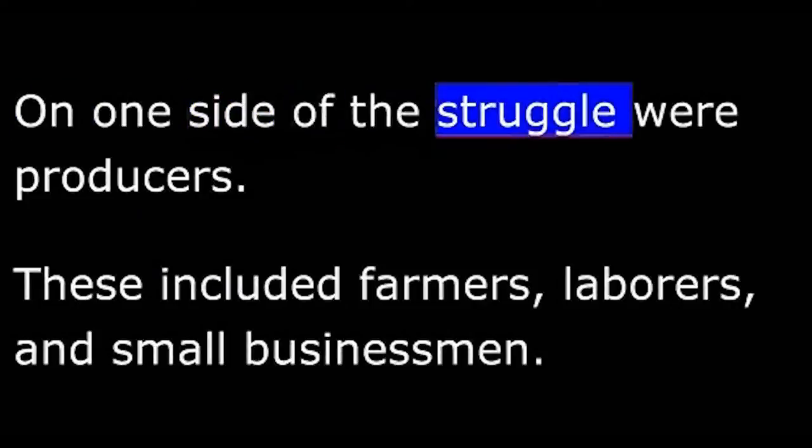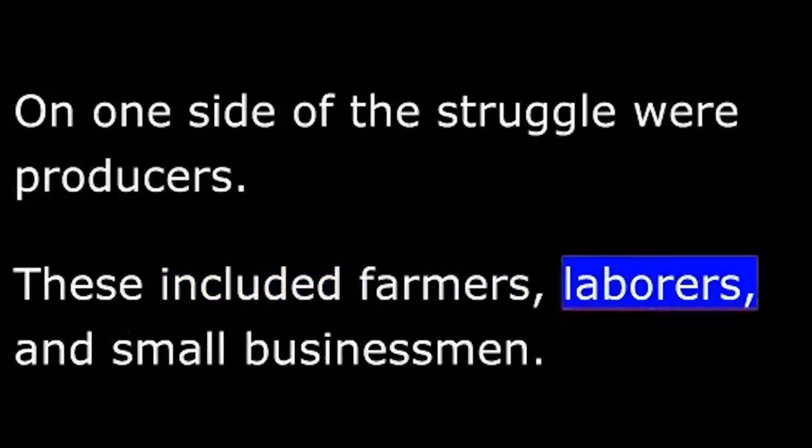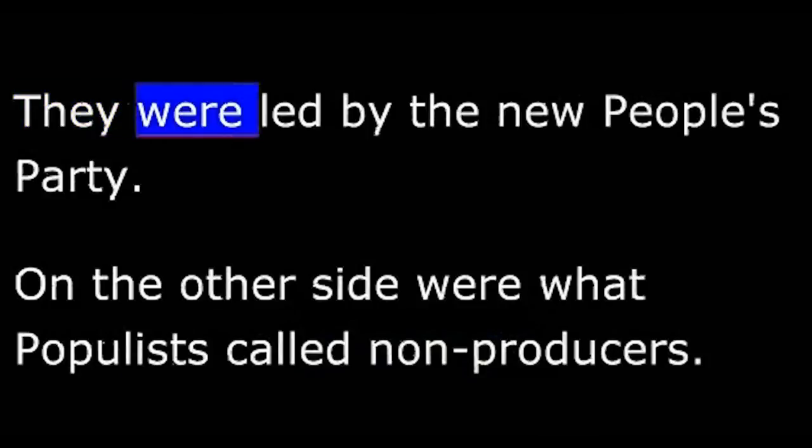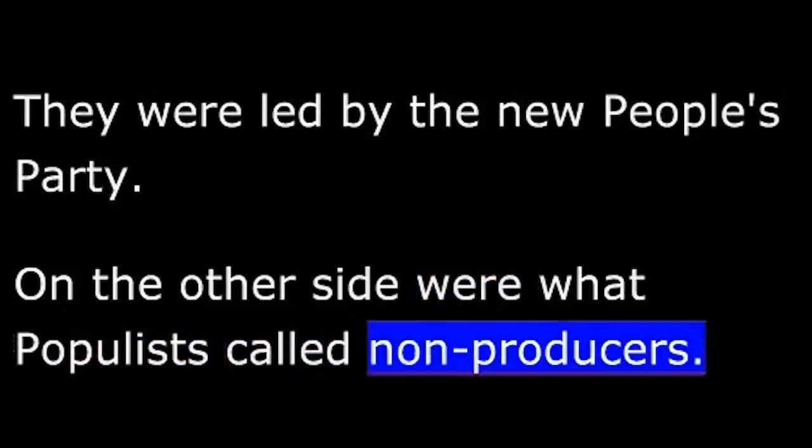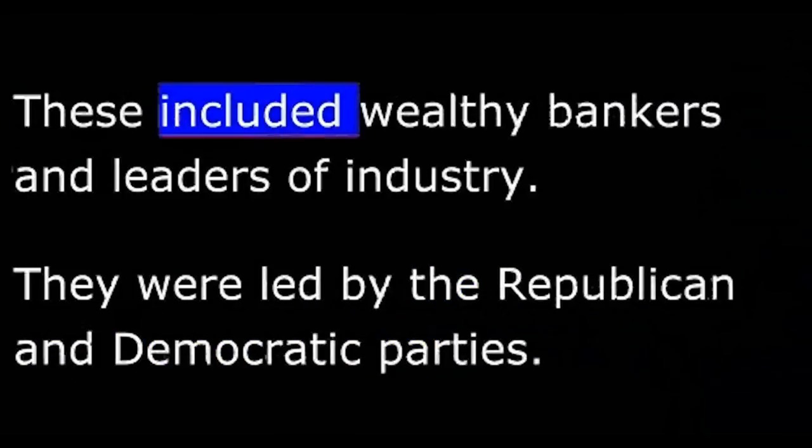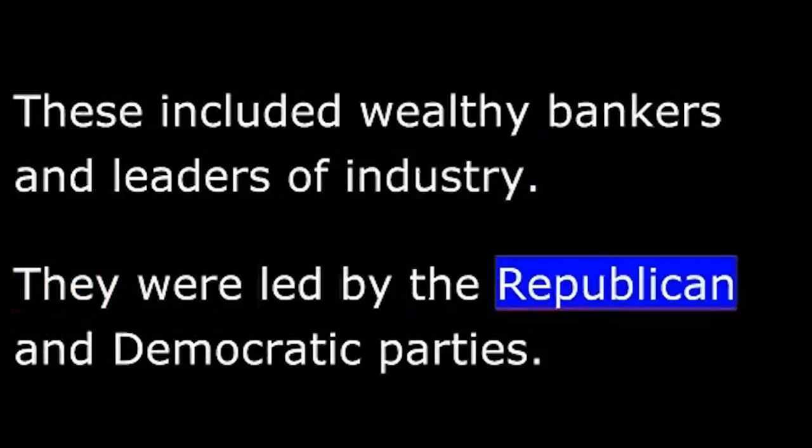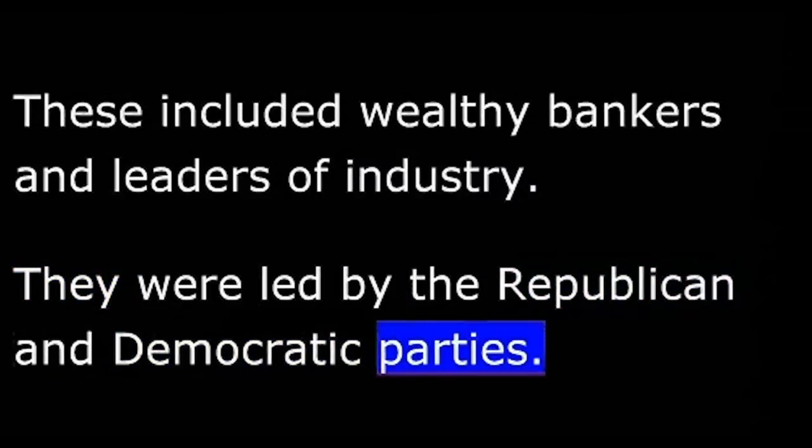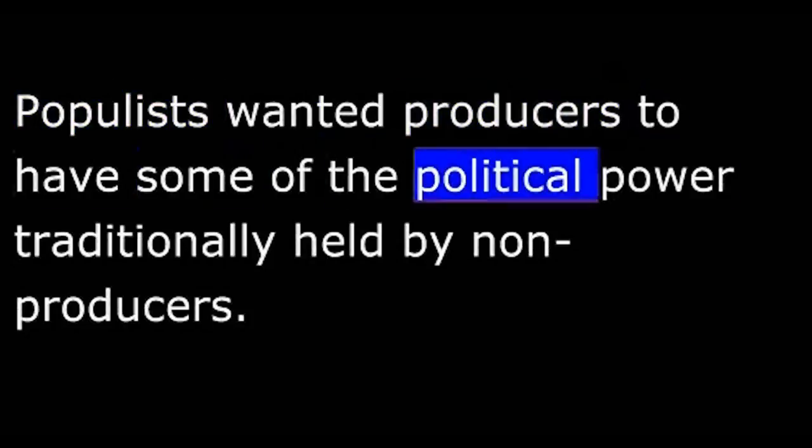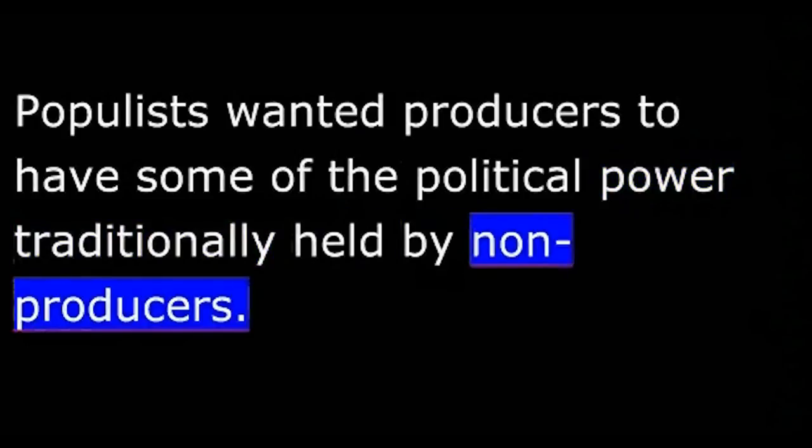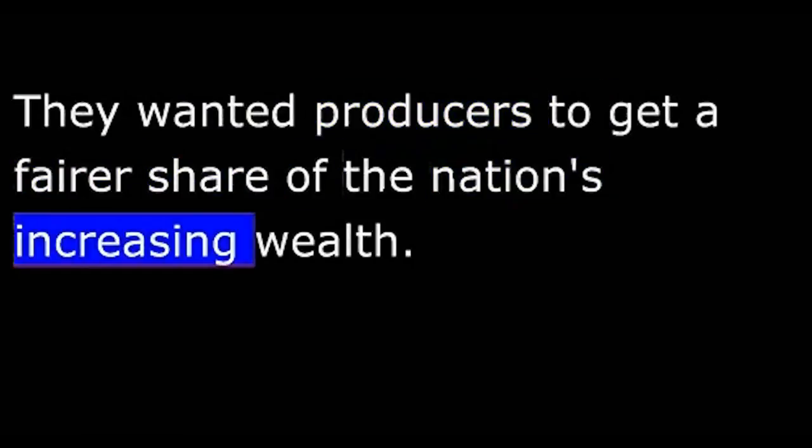On one side of the struggle were producers. These included farmers, laborers, and small businessmen. They were led by the New People's Party. On the other side were what populists called non-producers. These included wealthy bankers and leaders of industry. They were led by the Republican and Democratic parties. Populists wanted producers to have some of the political power traditionally held by non-producers. They wanted producers to get a fairer share of the nation's increasing wealth.